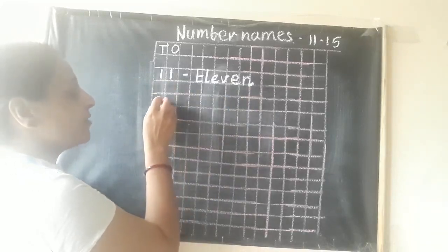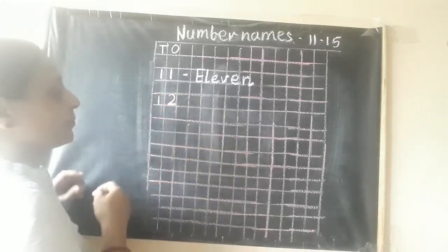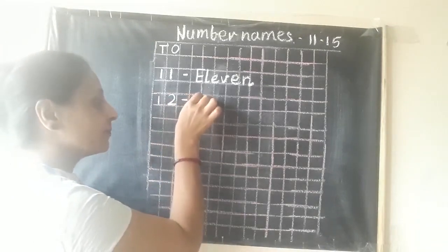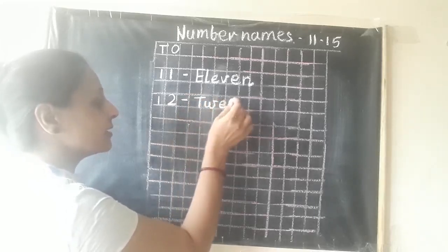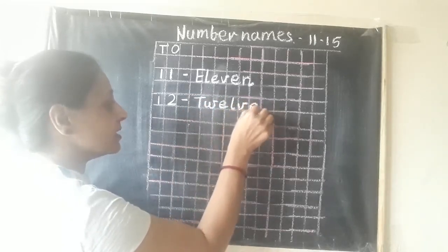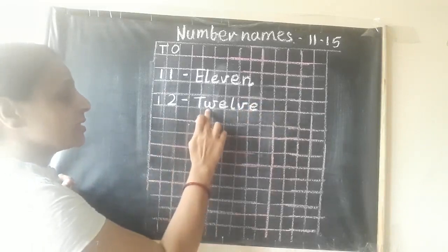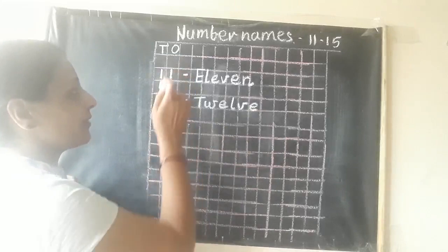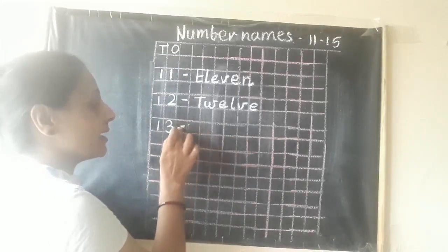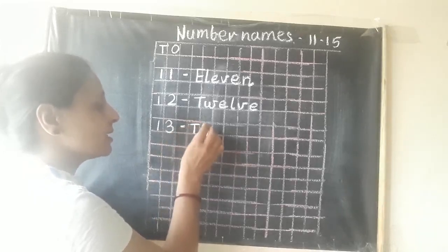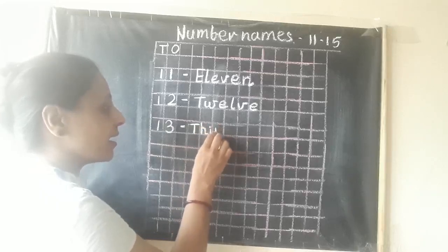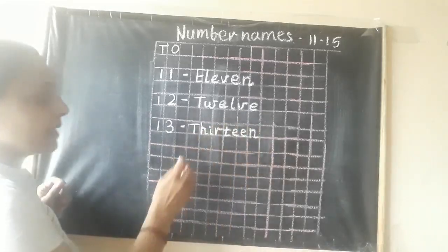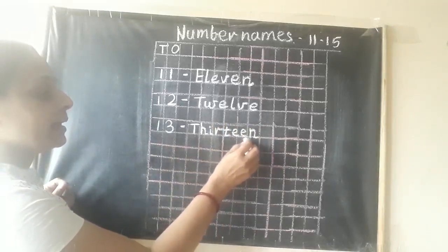Now leave a box and then we are going to write number 12. Here again I am going to write the number name of 12. T-W-E-L-V-E. 12. Once again: T-W-E-L-V-E. 12. Now we will move on to 13. I will write 13 under T and O box, then put a dash. Now I am going to write 13: T-H-I-R-T-E-E-N. 13. Once again: T-H-I-R-T-E-E-N. 13.